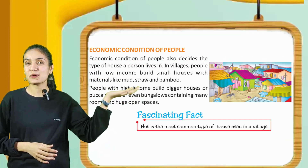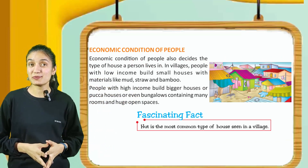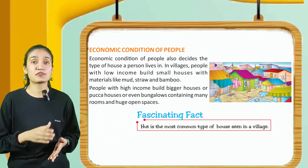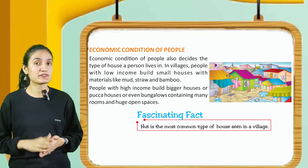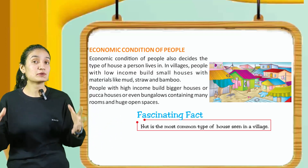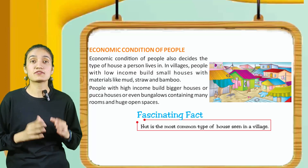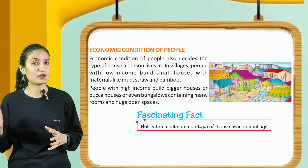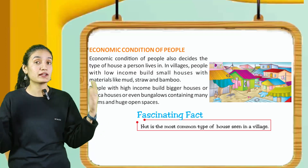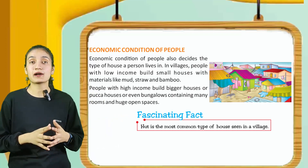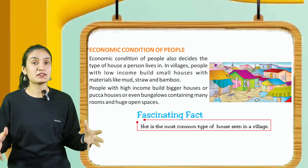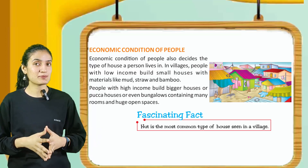The next topic is economic condition of people. Economic condition of people also decides the type of house a person lives in. In villages, people with low income build small houses with materials like mud, straw and bamboo. People with high income build bigger houses or pakka houses or even bungalows containing many rooms and huge open spaces.